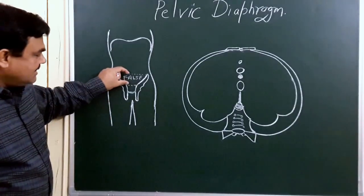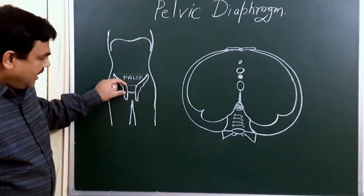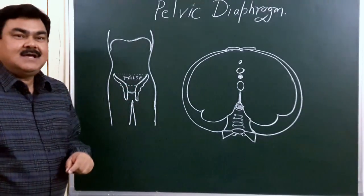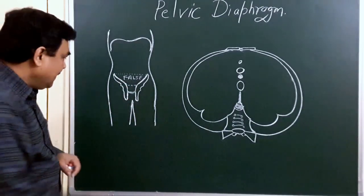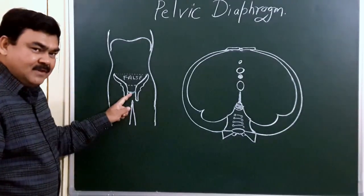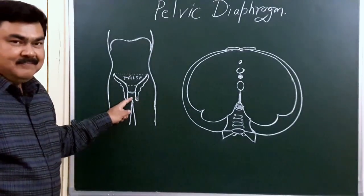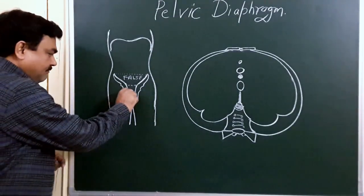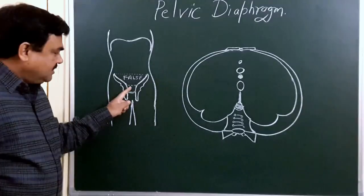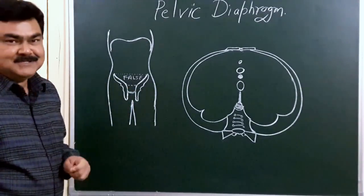Above the pelvic brim is the false pelvis, and below the pelvic brim is the true pelvis or lesser pelvis. This part is the pelvic diaphragm. Below the pelvic diaphragm, this part is the perineum. This is the pelvic diaphragm, this is the true pelvis, and this is the false pelvis.